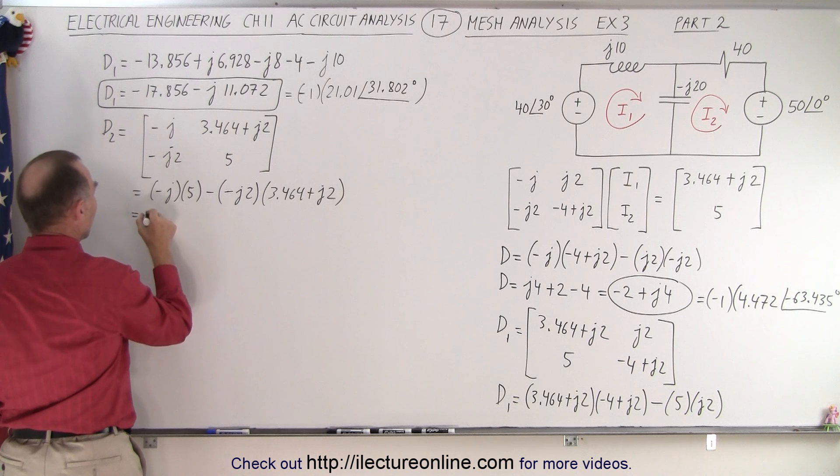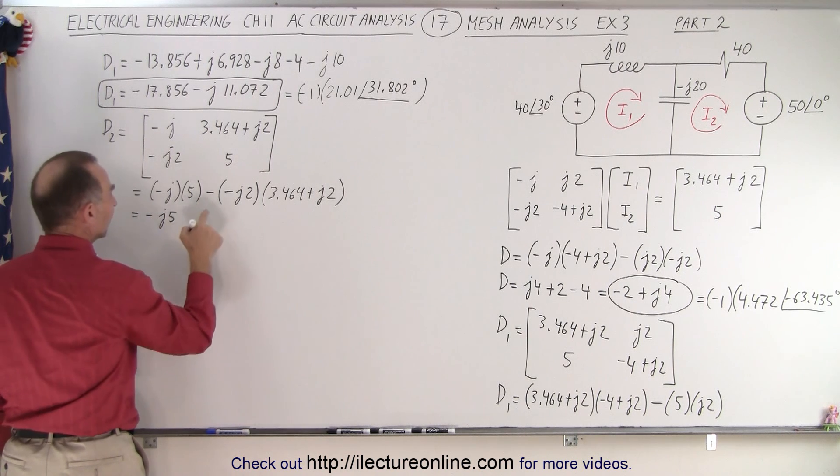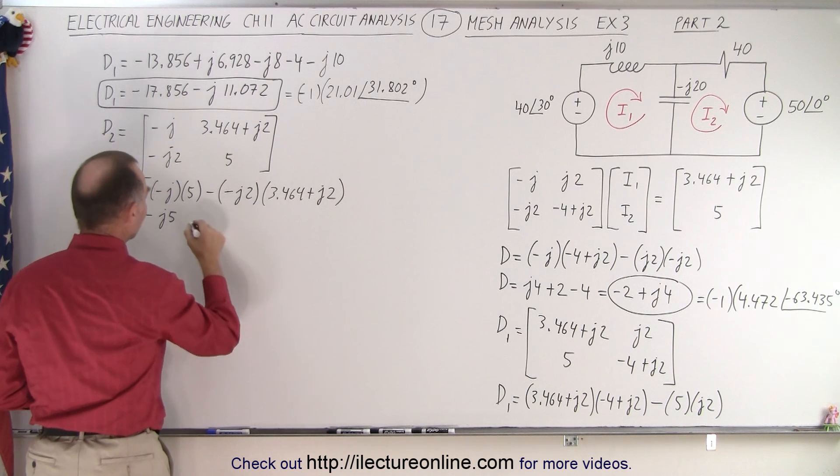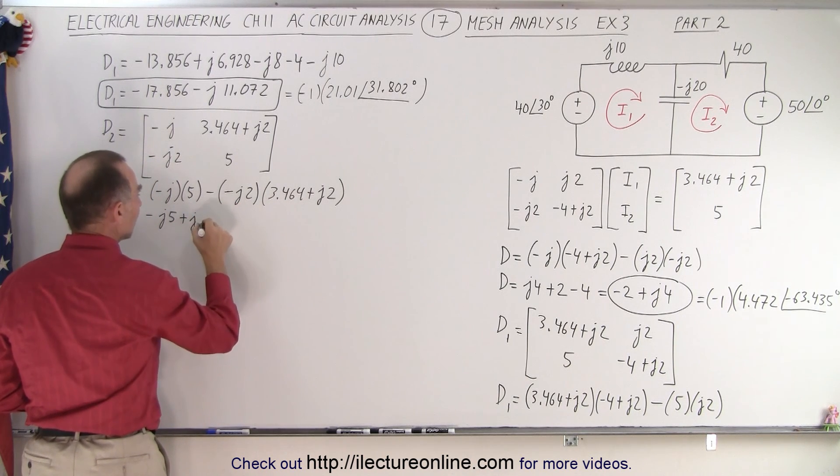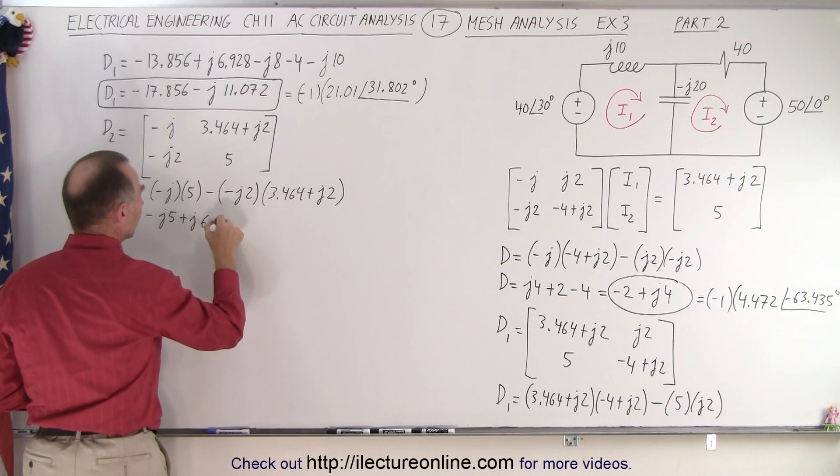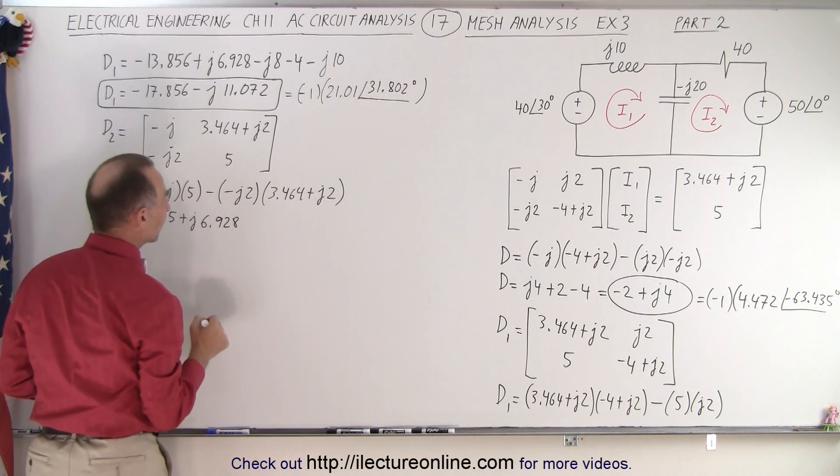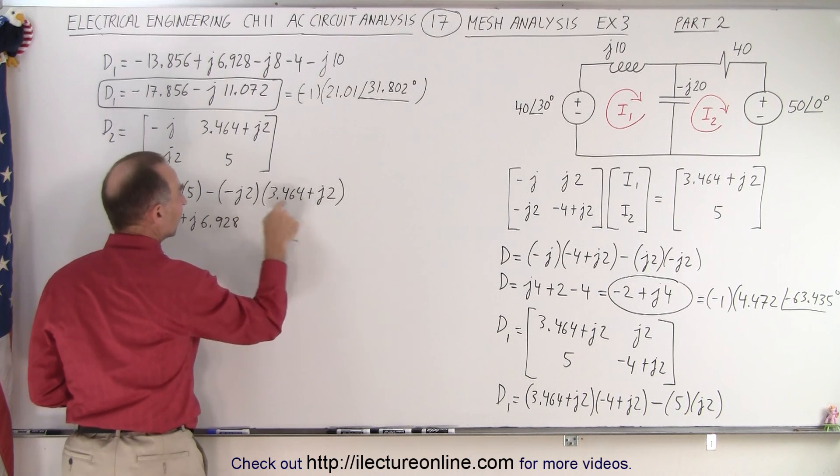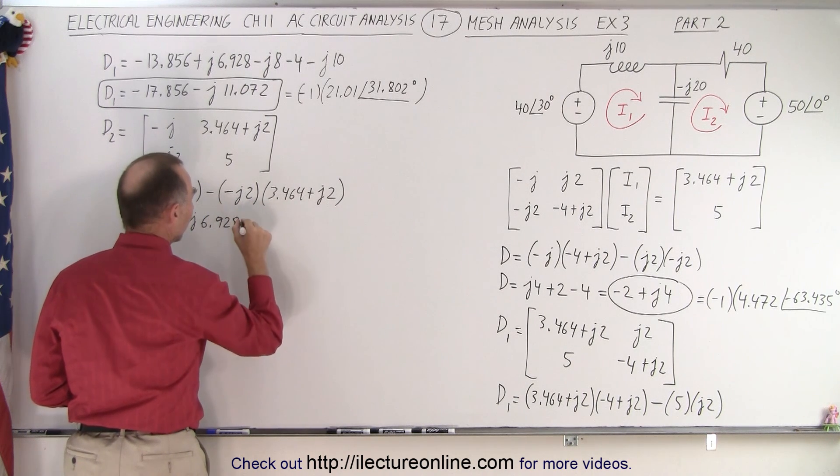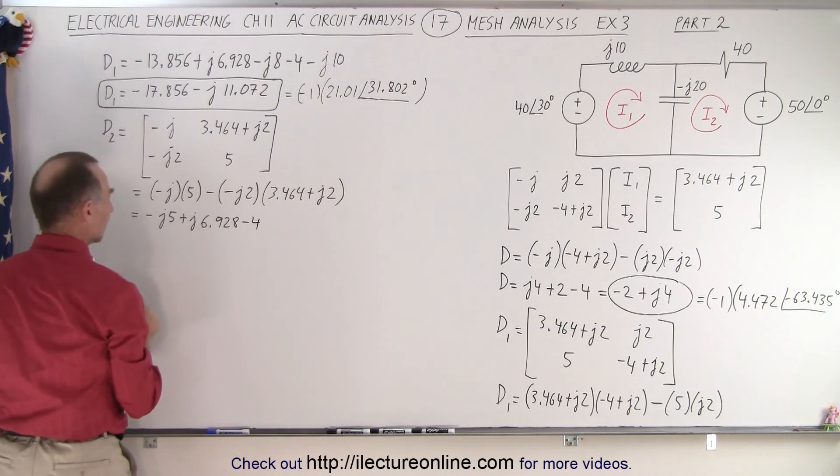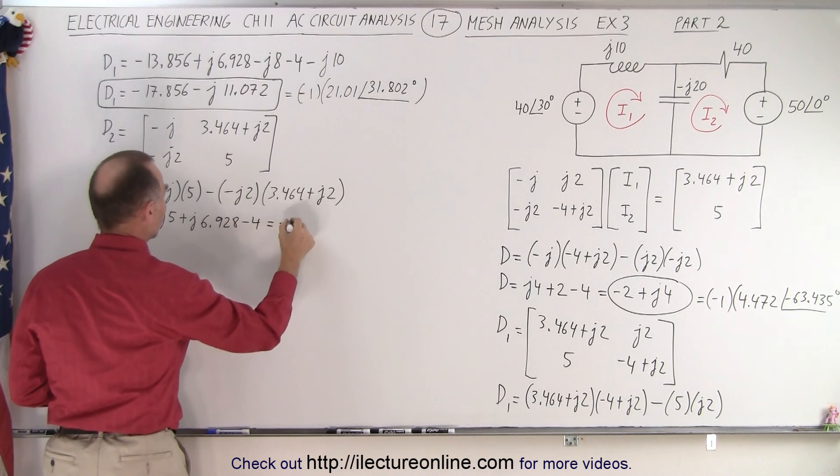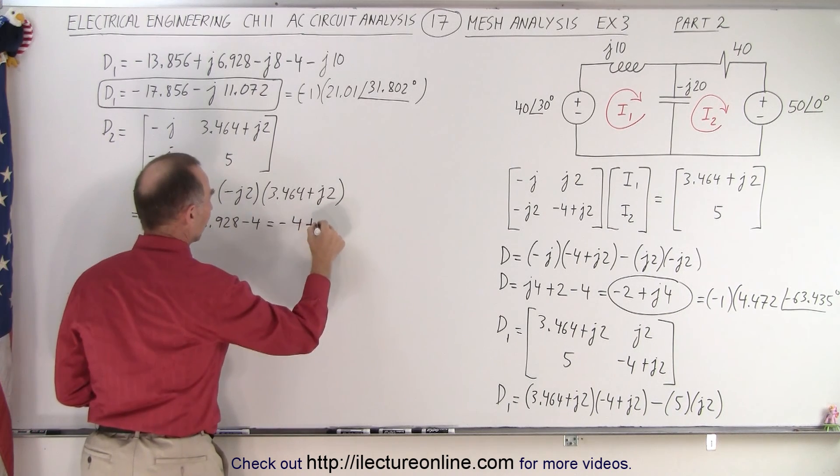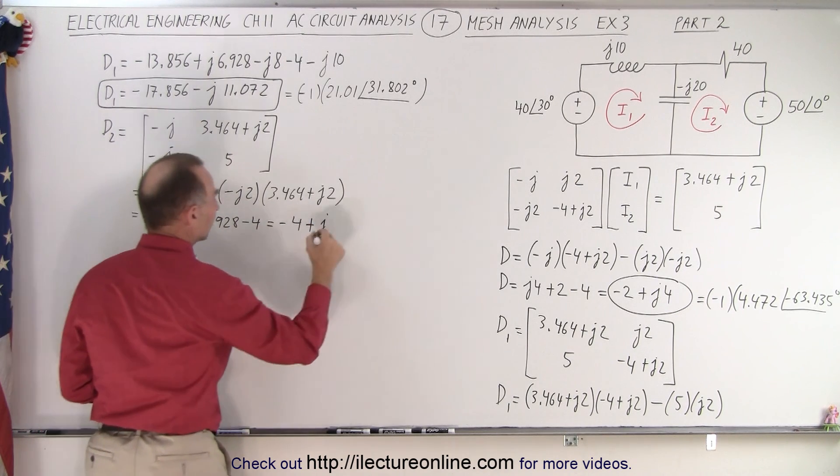Over here, this becomes equal to minus J5. Over here, I have a minus times a minus, that's a plus. J2 times this, that gives me plus J 6.928. And multiplying this times this, I get a minus times a minus, that's plus. But a J times J gives me minus again, 4. Alright, so this becomes equal to minus 4. And a plus J, 1.928.